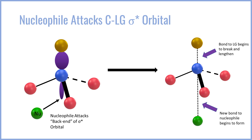Importantly, this is not like SN1 where the bond spontaneously ruptures. The nucleophile has to both A, get to the antibonding orbital to actually break the bond, and B, have sufficient nucleophilicity — where the nucleophile has a greater affinity for the carbon than does the leaving group. If the nucleophile does not have a very high degree of nucleophilicity, i.e. if the nucleophile is very weak, it will not be able to effectively break the carbon-leaving group bond.